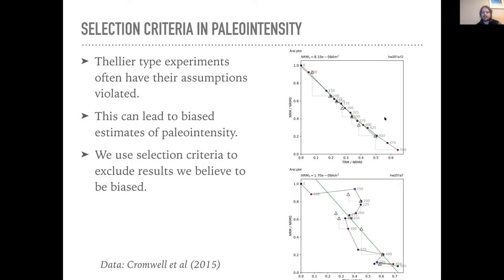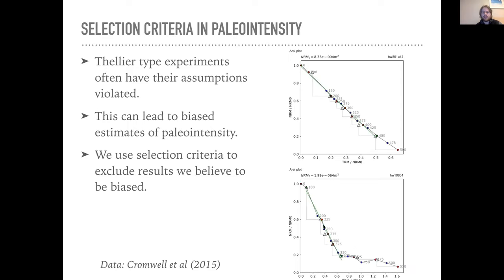We're looking at Thellier experiments. I've given two examples of Arai plots. The idea is that we demagnetize the specimen by heating it to temperature and cooling it in zero field, then give it a magnetization by heating and cooling it in a known lab field. The ratio of those two magnetizations should give us the ratio of the two fields, obeying a linear relationship. I've shown one experiment done reasonably well, and one done poorly — probably due to alteration of the material — which gives a very biased estimate of paleo intensity.